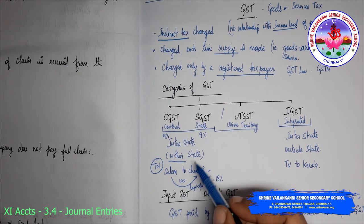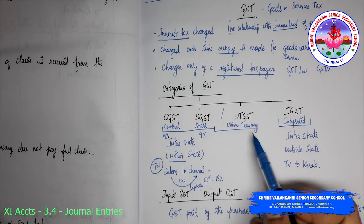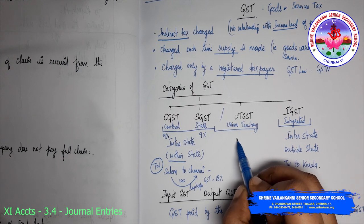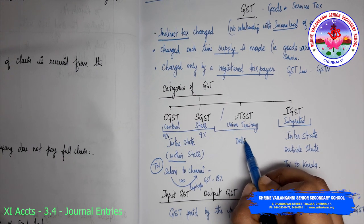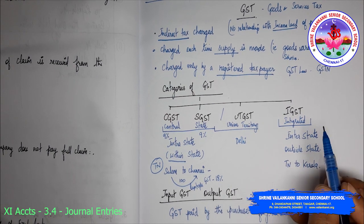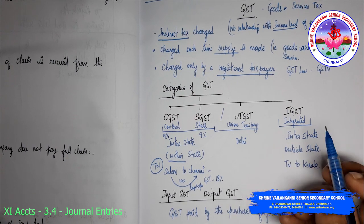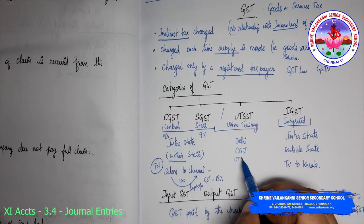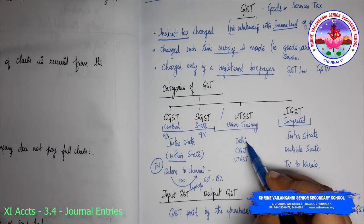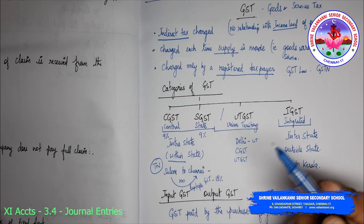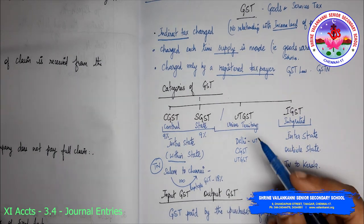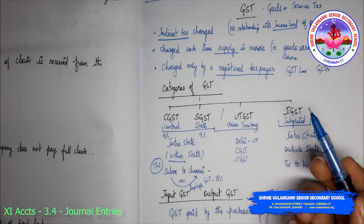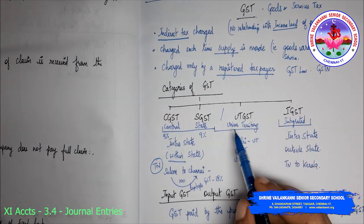Instead of a supply within a state, if it is a supply within a union territory — say for example, from one location in Delhi to another location in Delhi — then CGST and UTGST will get attracted. If it involves Puducherry, which is a union territory, it will not be called SGST; it is a union territory, so it is UTGST.